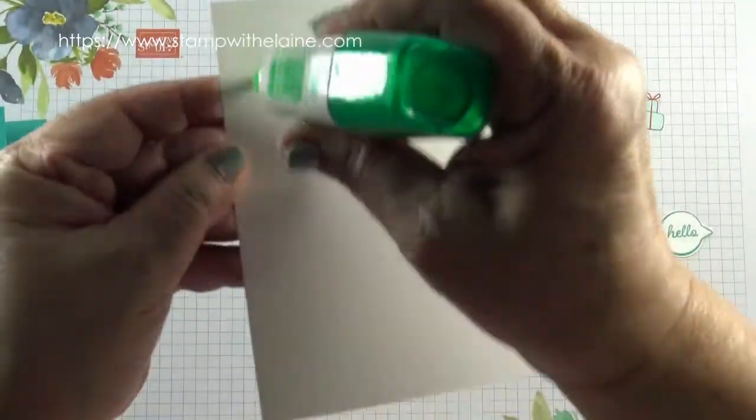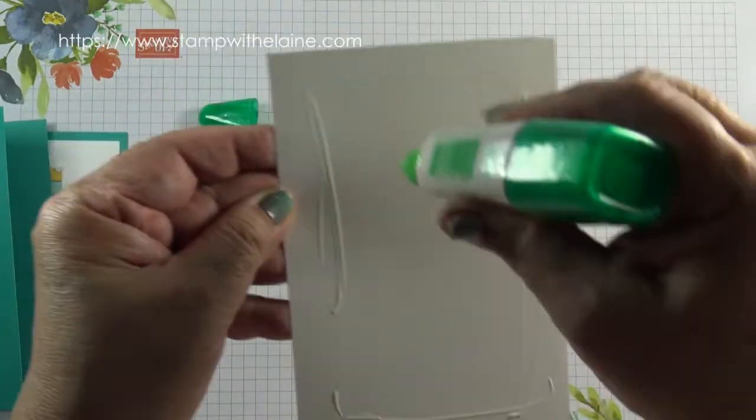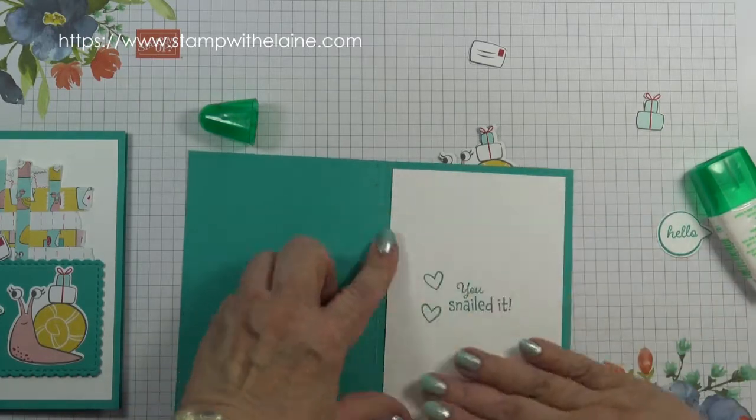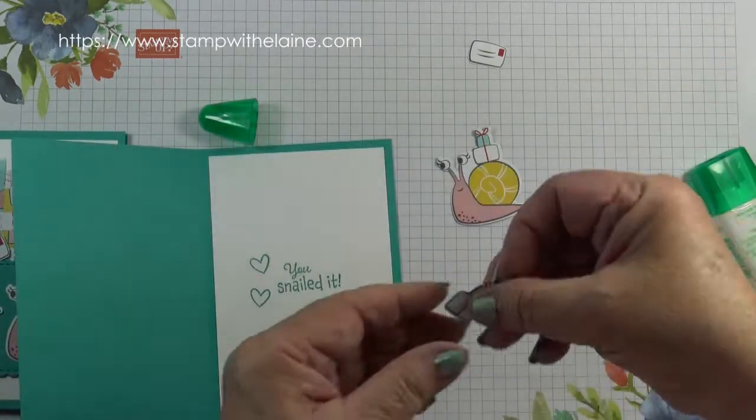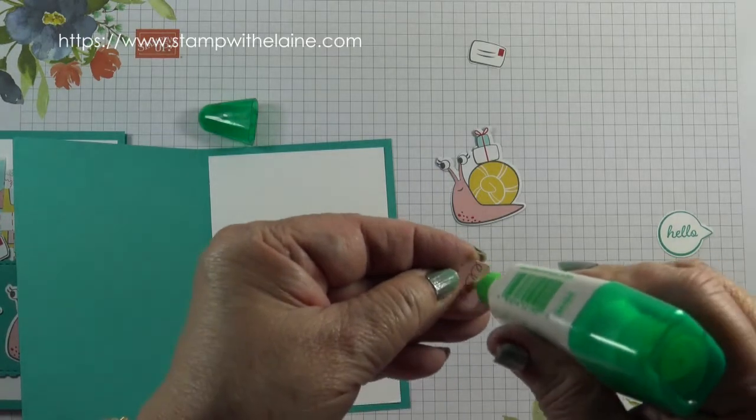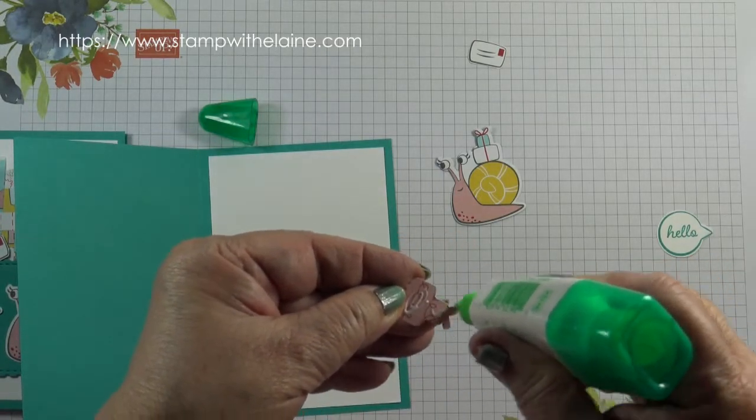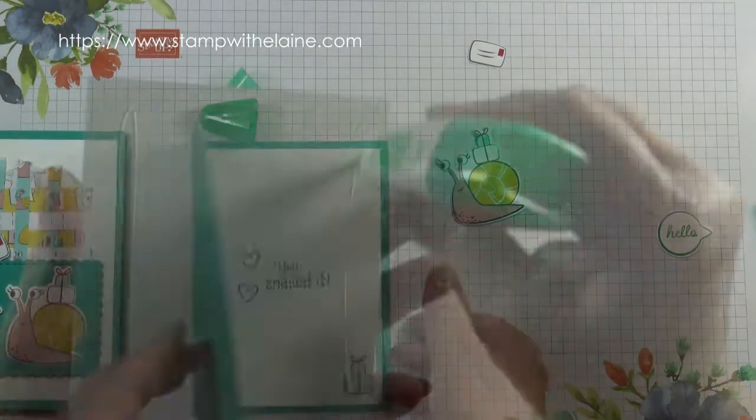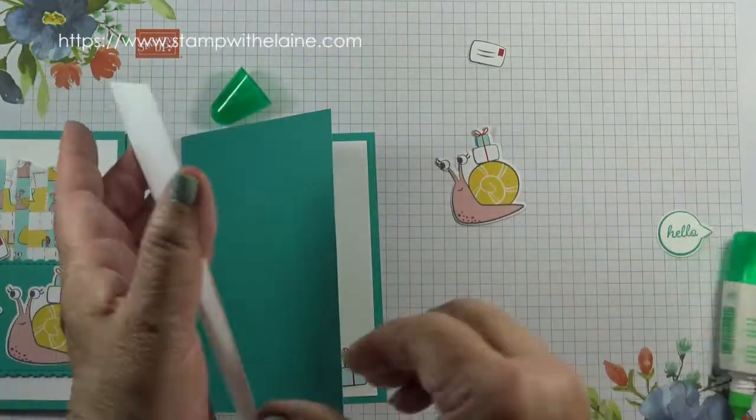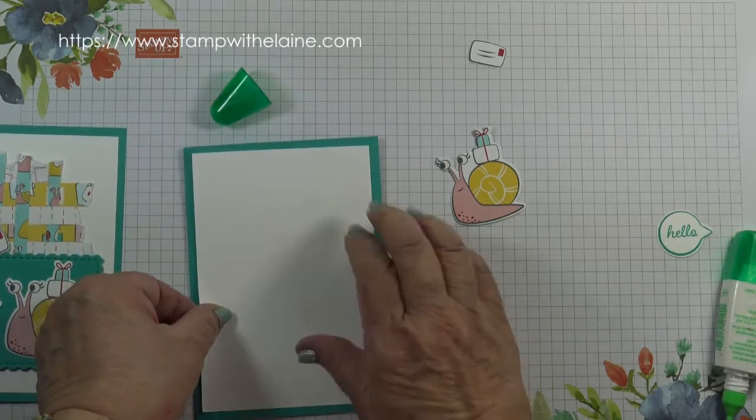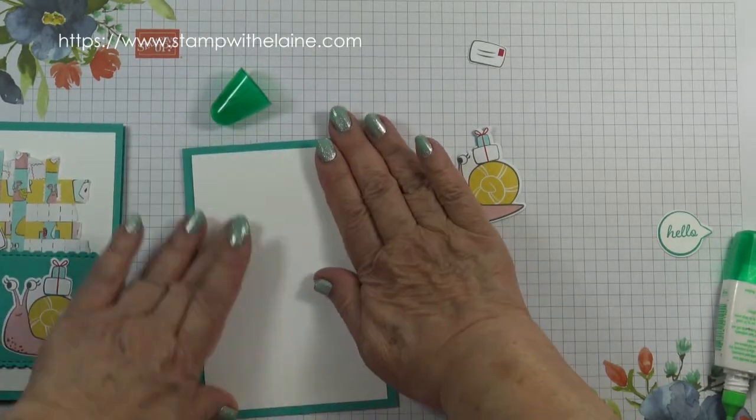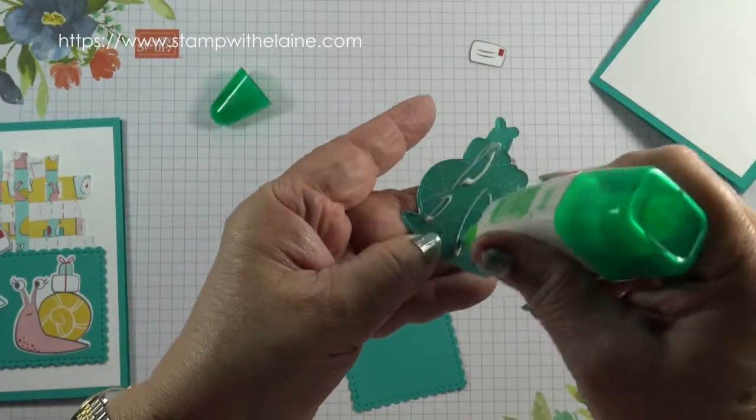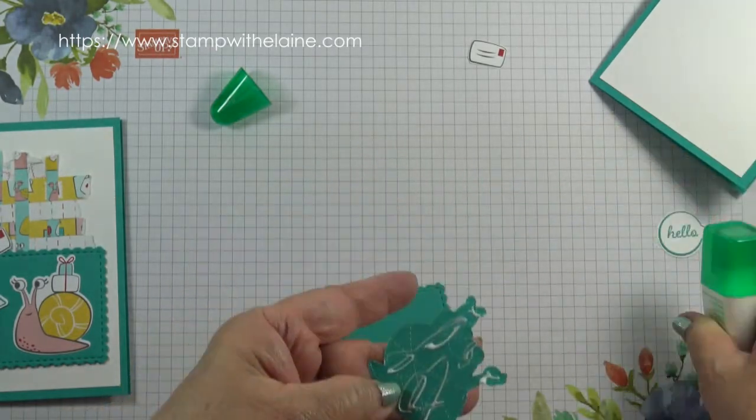I'll adhere the inside piece to the card base so I don't lose it. Very often I'll put something down and then I spent half an hour trying to look for it. I'll glue the die cut snail as well so I don't lose that either.